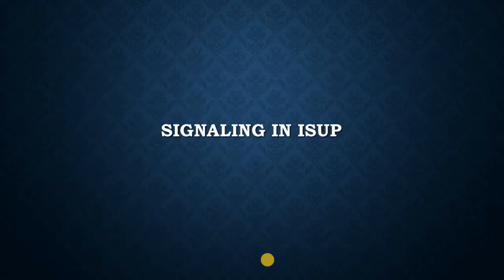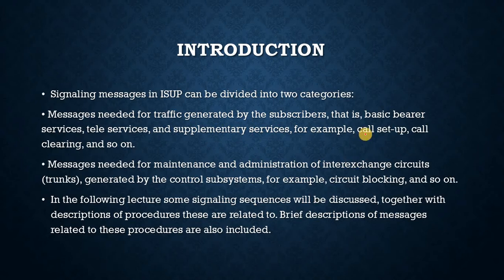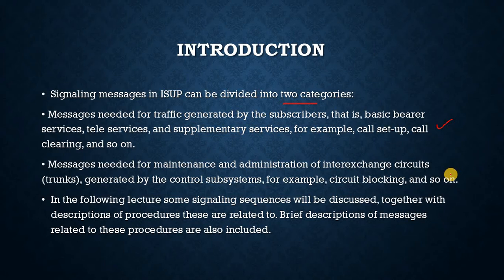Signaling in ISUP. Signaling messages in ISUP can be divided into two categories. First, messages needed for traffic generated by the subscribers — that is, basic bearer services, tele-services, and supplementary services, for example call setup and call clearing. Second, messages needed for maintenance and administration of inter-exchange circuits, or trunks, generated by the control subsystems, for example circuit blocking. In the following lecture, some signaling sequences will be discussed, together with descriptions of the procedures these are related to, and brief descriptions of messages related to these procedures.